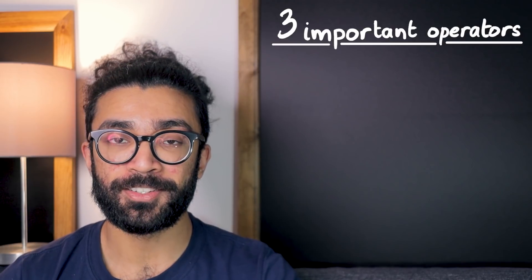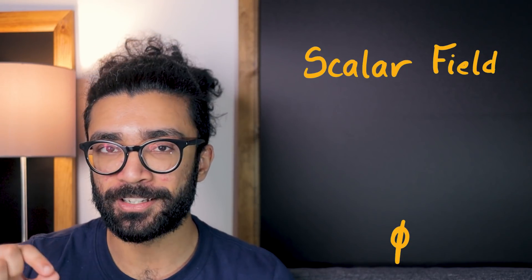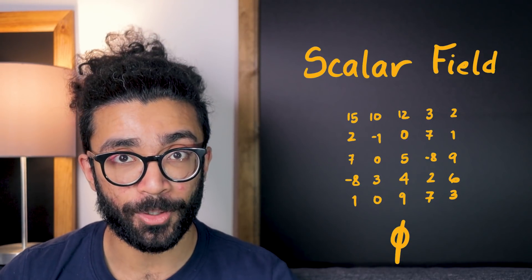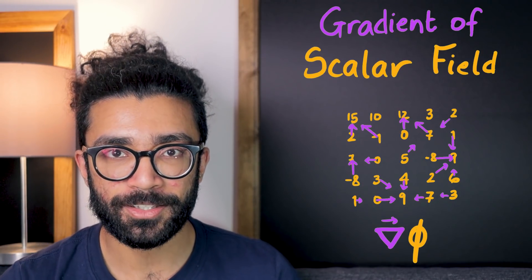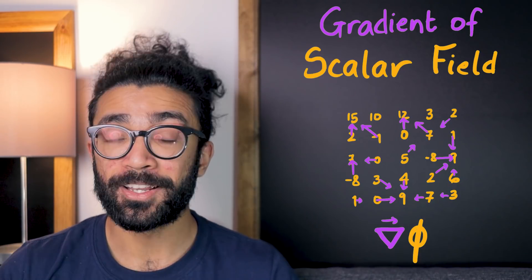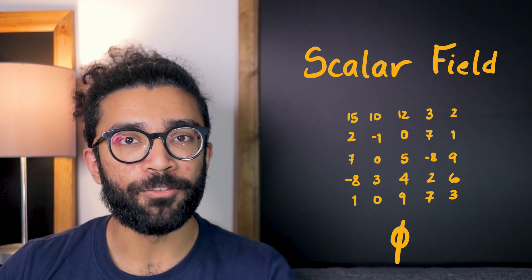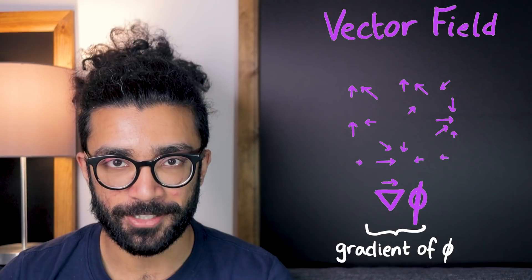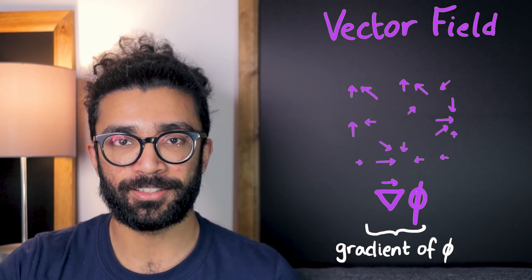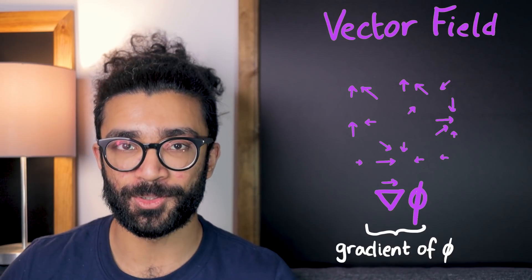The first of these operators is known as the gradient operator. This essentially takes what's known as a scalar field — a region of space in which we can assign a number to every single point — and it finds, for every single point, the direction in which the scalar field increases the fastest. In other words, we start with a scalar field, we find the gradient of it, which looks like this written mathematically, and we end up with a vector field where each vector tells us the direction and size of fastest increase of our original scalar field.